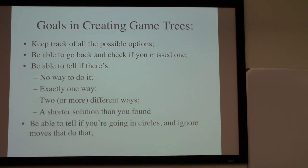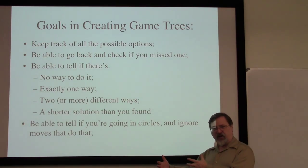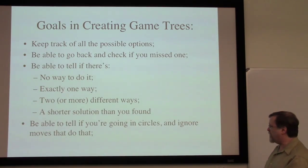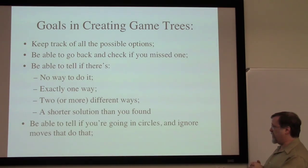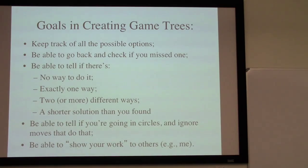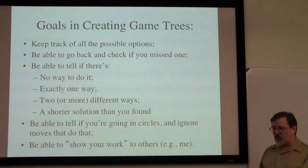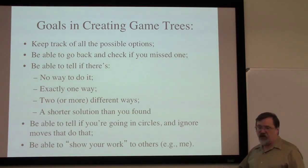Sometimes when doing a puzzle, we end up getting into certain cycles — back to the same position — and we don't notice it, so we just keep pouring and can end up in an infinite process getting to the same position over and over again. When constructing game trees as we go, we'll be able to see that this position is exactly the same as something earlier on the tree, so we ignore a move that does that and only look for better ones. Finally, we'll be able to show our work. If we've solved a puzzle and others haven't, we want to be able to show how we did it. For classwork, it's important to show your work well enough to be understood.